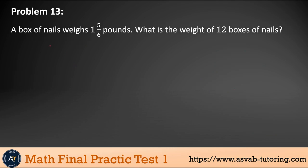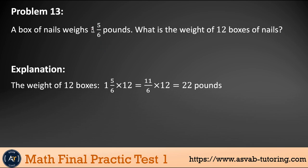Next problem: A box of nail was one and five over six pounds. What is the total weight of 12 boxes of nails? The purpose of doing that is to refresh your multiplication steps. You have to multiply that. As I said always, if you have a mixed number, always need to make this mixed number into improper fraction, and multiply by 12. When you multiply, multiply top to top, bottom to bottom. If you divide that, that gives you 22 pounds.